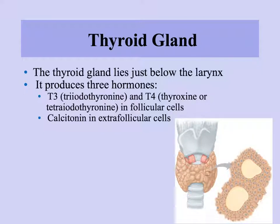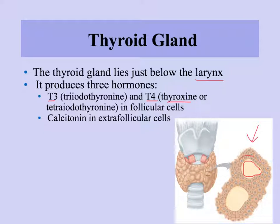The thyroid gland is found just below the larynx in the throat and produces three important hormones. T3 (triiodothyronine) and T4 (tetraiodothyronine, also called thyroxine) are produced in follicular cells surrounding a central cavity called the colloid — these cells are simple cuboidal epithelial cells. The numbers three and four refer to how many iodine atoms are present. Extra follicular cells in the thyroid produce calcitonin, which is involved in keeping blood calcium levels appropriate.